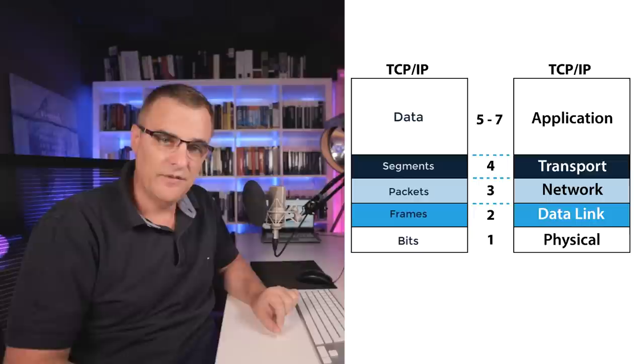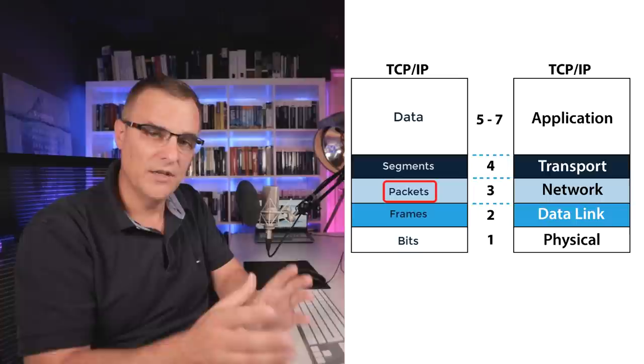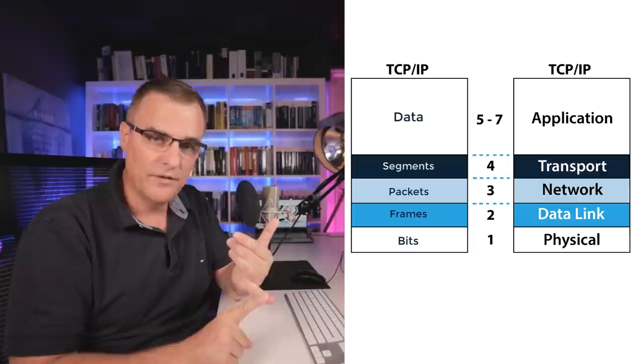On top of bits, we have frames at layer two. When we're sending data through an Ethernet switch — a layer two device — we are sending frames. A frame is switched from one port on a switch to another. At layer three, we have packets — a router, which is a layer three device, routes packets from one interface to another. At layer four, we have segments. So: layer one is bits, layer two is frames, layer three is packets, layer four is segments, and layers five through seven are the application.